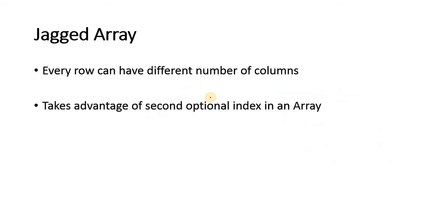Using the advantage of the optional second index, every row of an array in Java can have a different number of columns. When every row can contain a different number of columns, we call such an array a jagged array. It takes advantage of the optional second index.